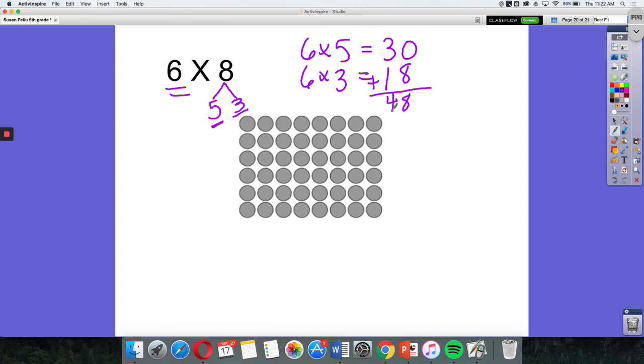So if I come down to my array here, 6 rows of 8, I would have 48. To show what I have done here with my distributive property, I said 6 rows of 5, and then 6 rows of 3. Again, when I add these up, I'm still going to get 48.